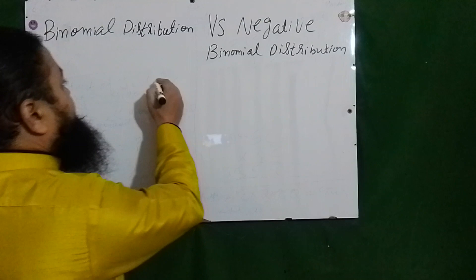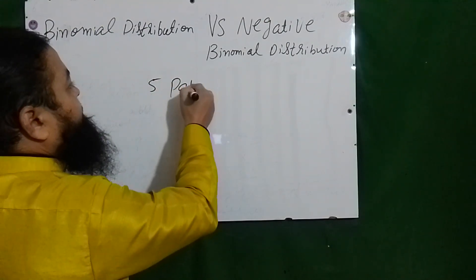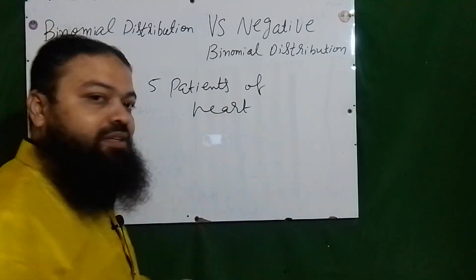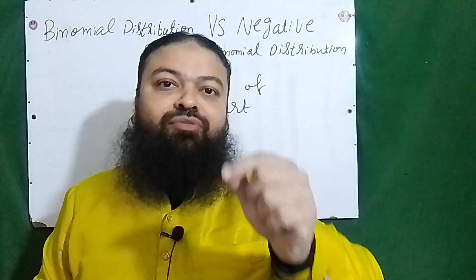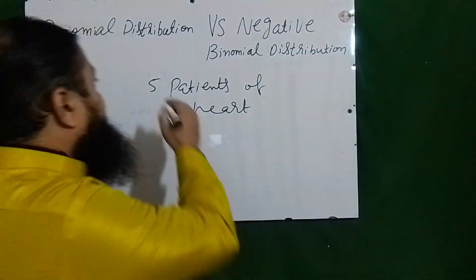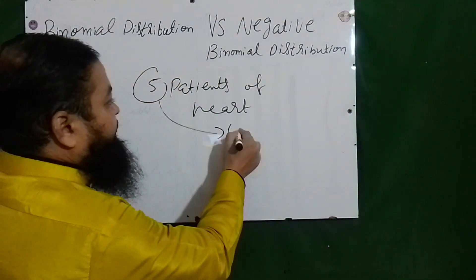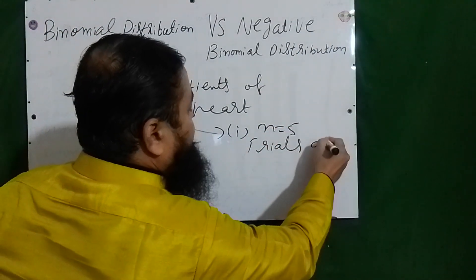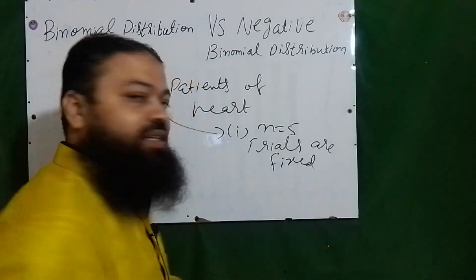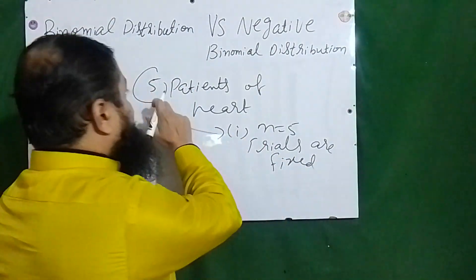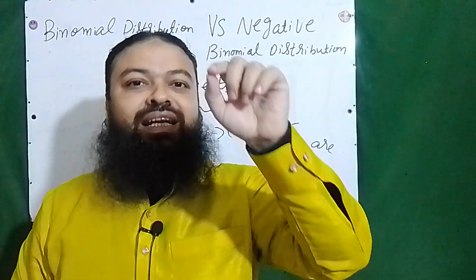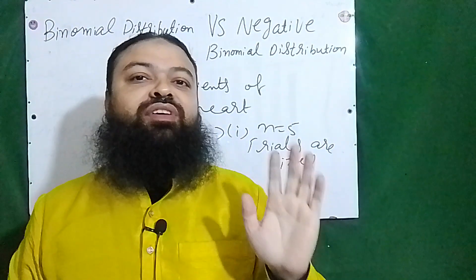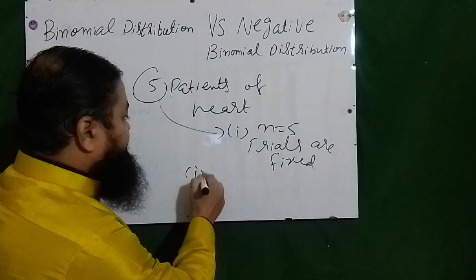For example, five patients came for heart surgery in a hospital. These are the trials. This is the first property: n is equal to five, trials are fixed. There are five patients who enter the hospital for their heart surgery and this is fixed. The second property is that trials are independent.